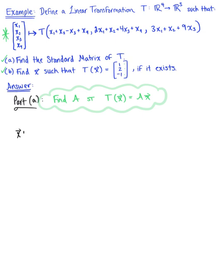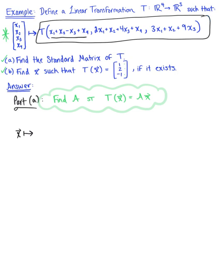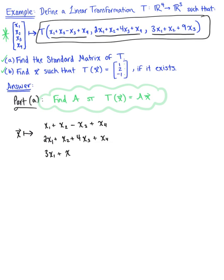I'm going to rewrite this given linear transformation in an equivalent matrix form. The first equation is our first row: x₁ + x₂ - x₃ + x₄. The second equation is the second row: 2x₁ + x₂ + 4x₃ + x₄. And the third equation is the third row: 3x₁ + x₂ + 9x₃. These two forms are equivalent.